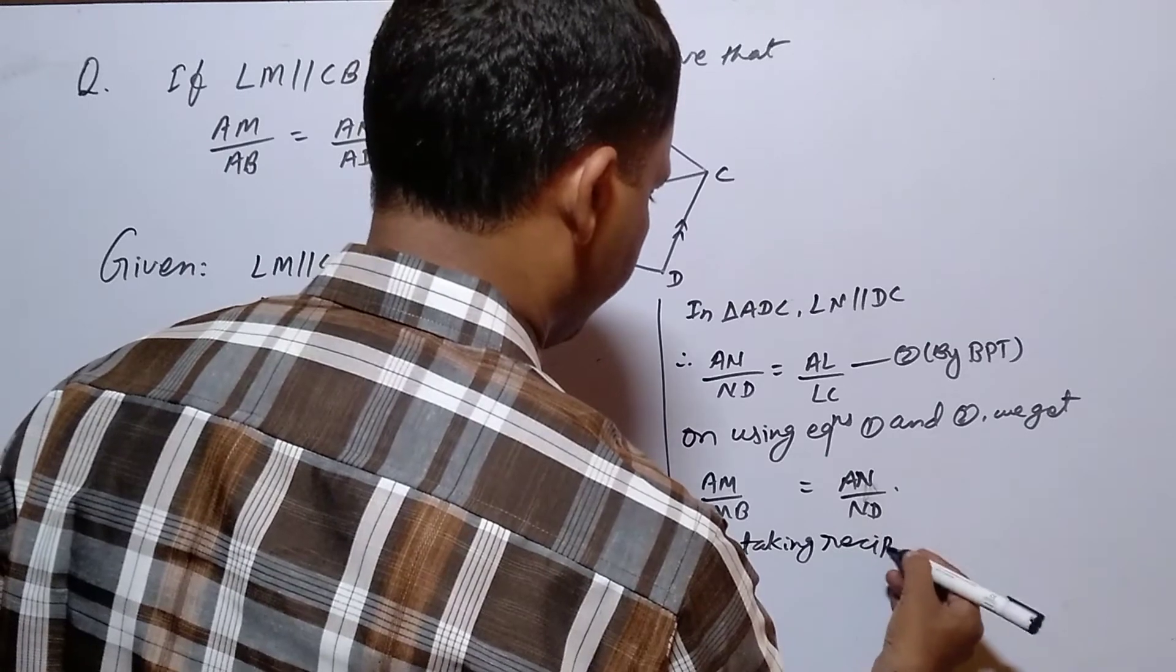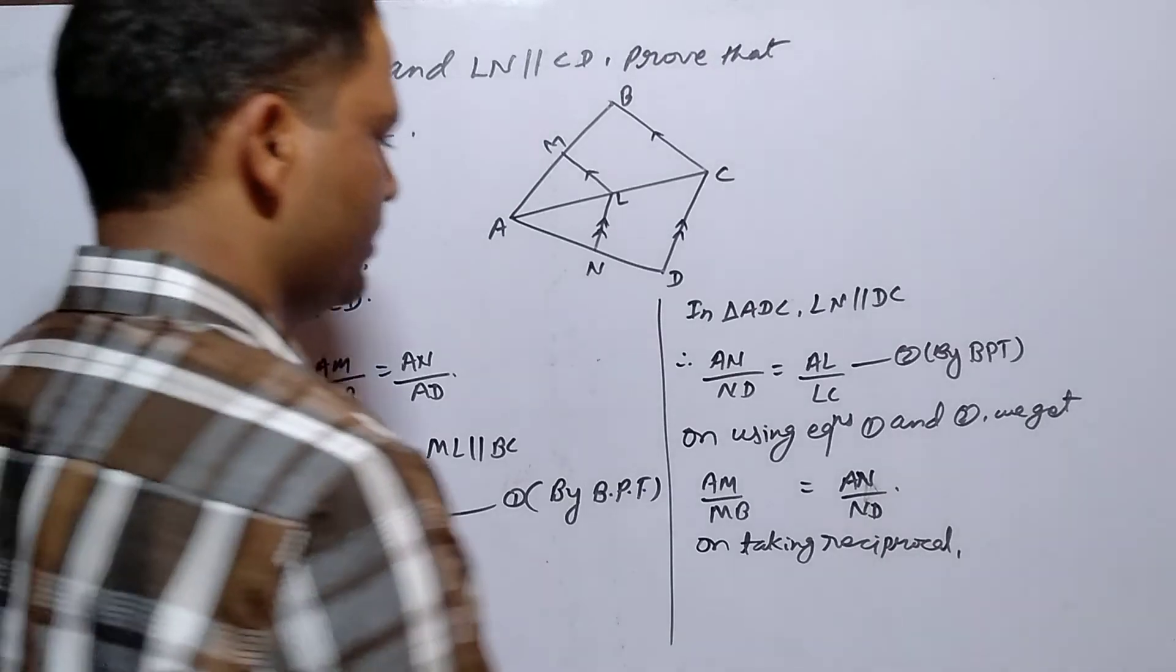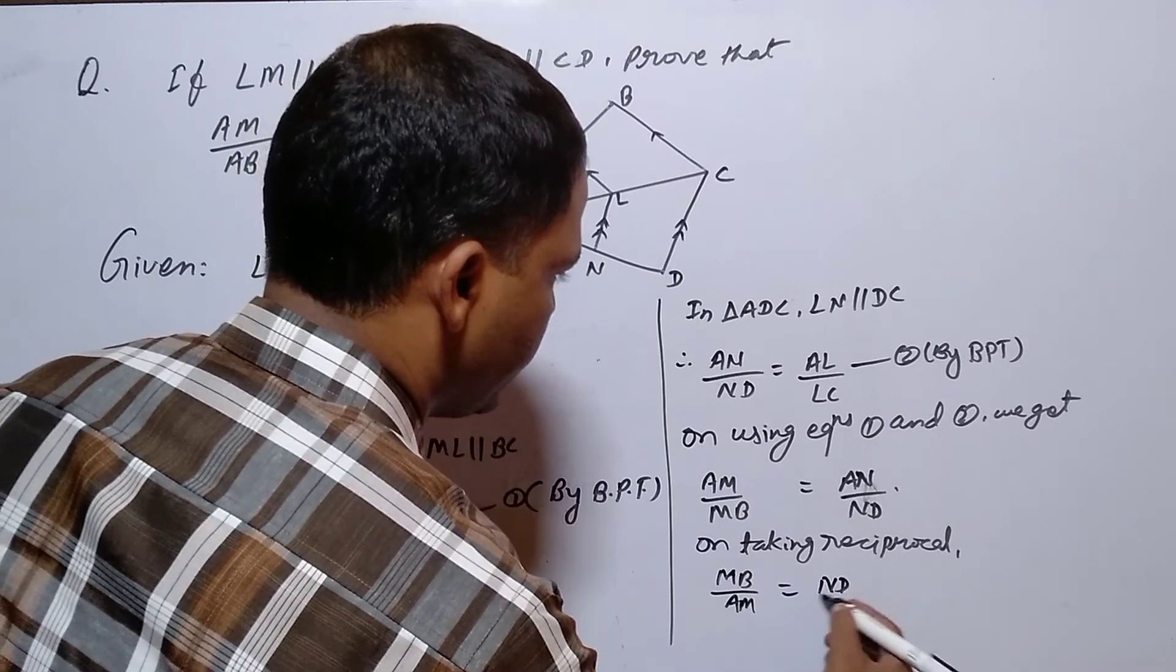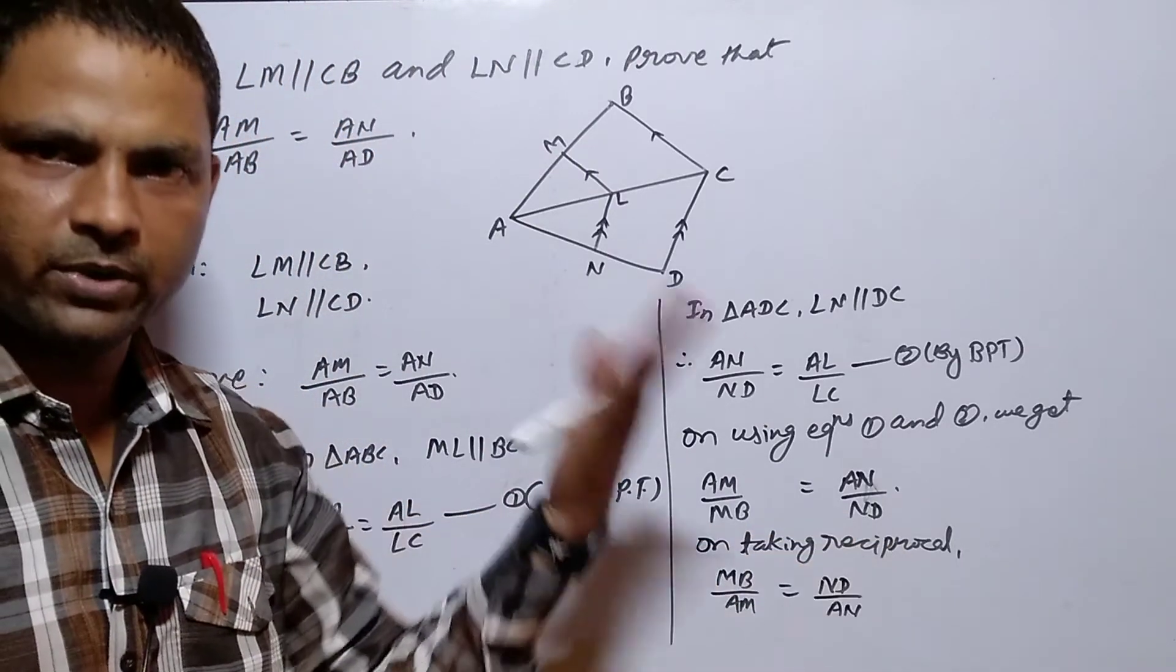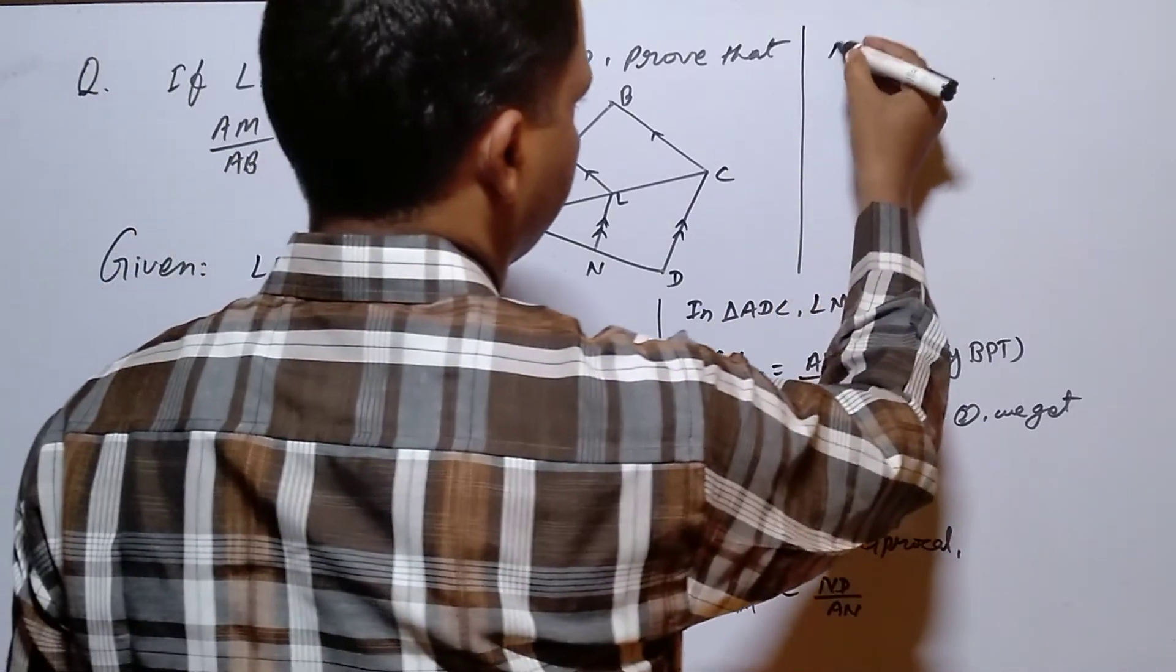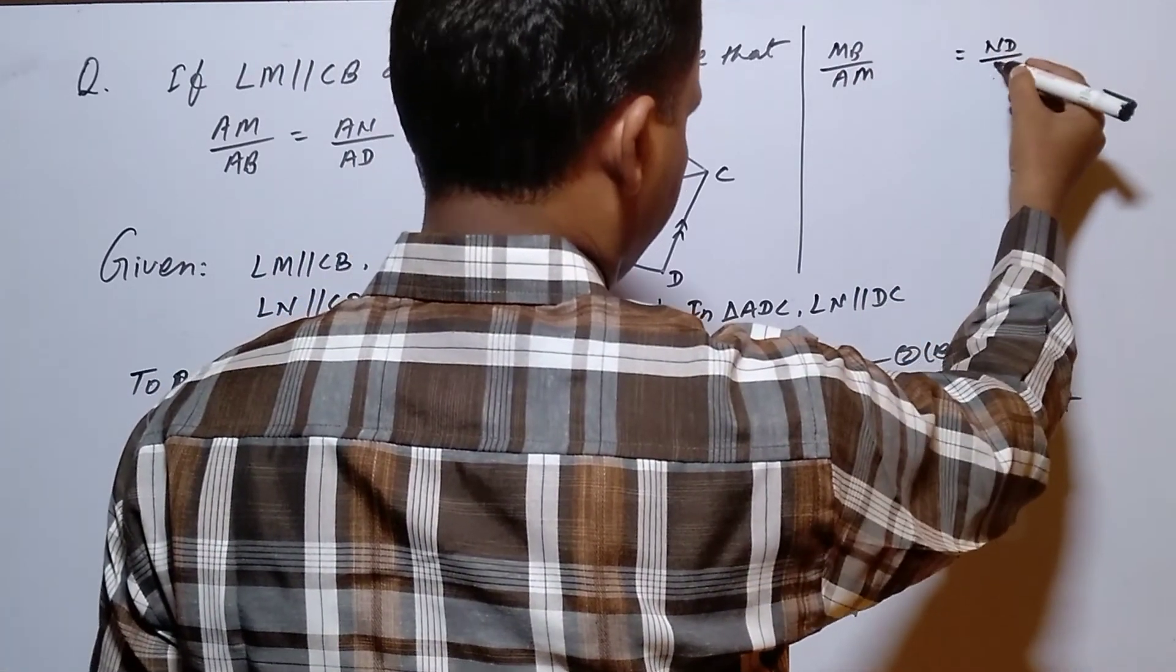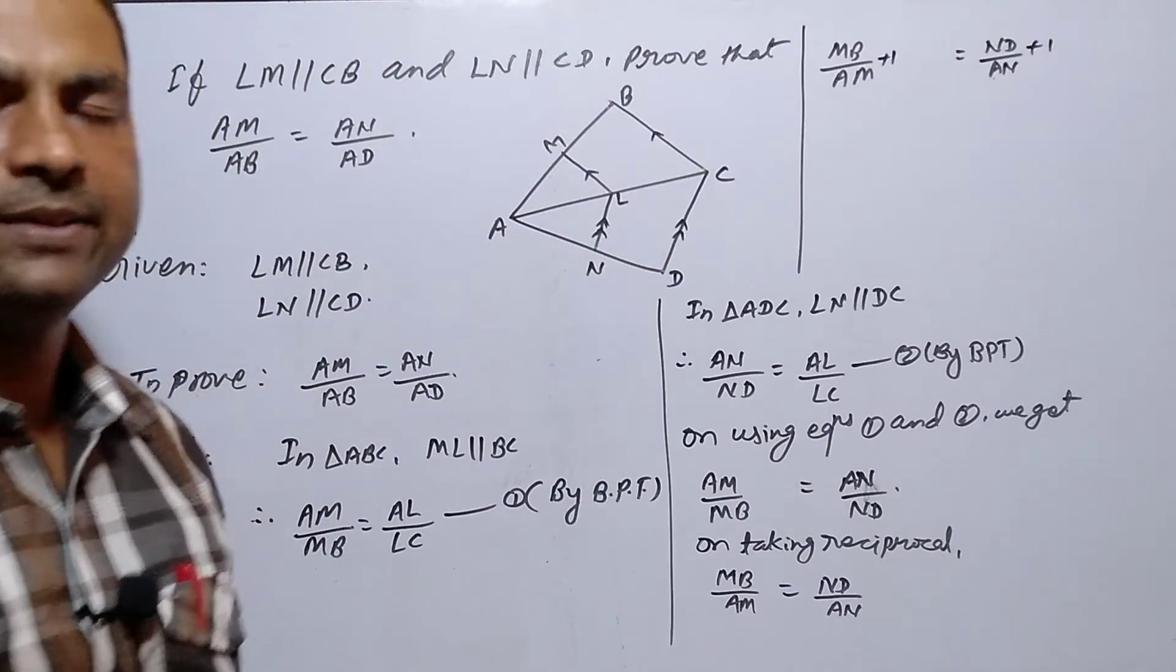On taking reciprocal, MB by AM is equal to ND by AN. Both sides add 1.